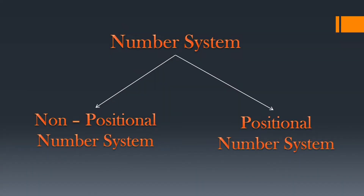If you have to define number system, then you can say it is a system of representing numbers. There are two types of number systems. The first one is non-positional number system and the second one is positional number system.